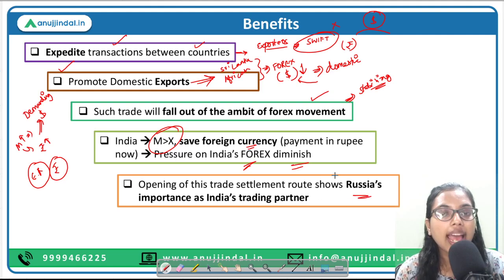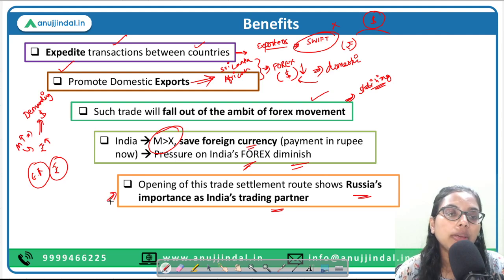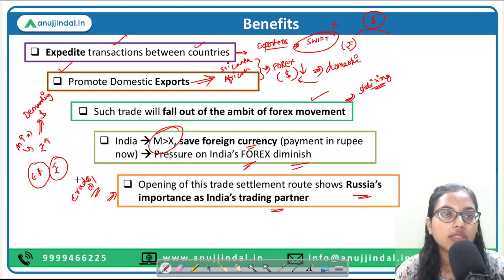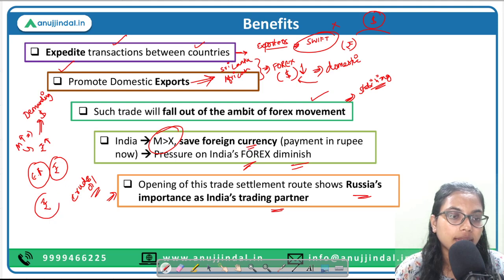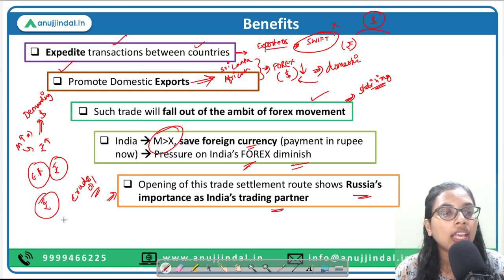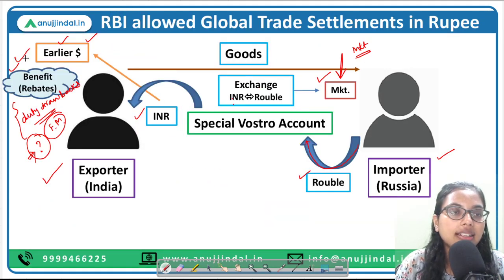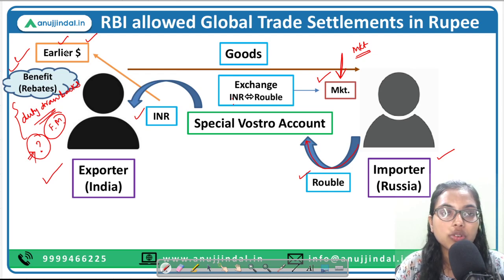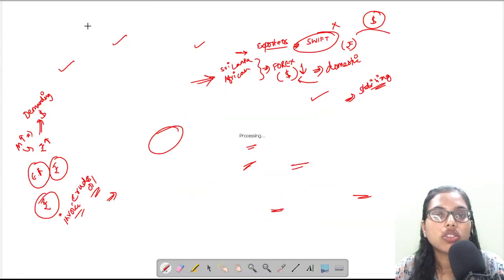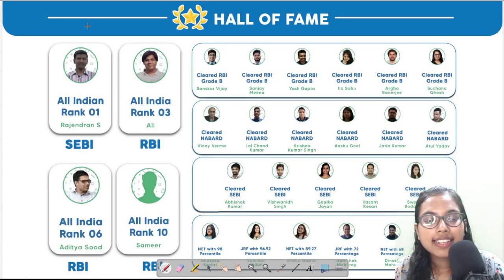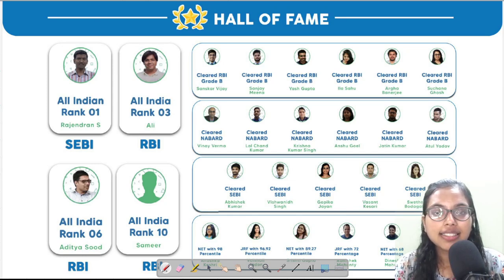Fourth, this also demonstrates India's trade relationship with Russia and how important Russia is as a trading partner. Additionally, India will also be getting discounts from Russia on importing crude oil. All these benefits become available to India under the rupee settlement system — under which even invoices will be prepared in rupees. The only remaining point of contention is whether exporters will continue receiving the duty drawback benefits they got when receiving payment in dollars.